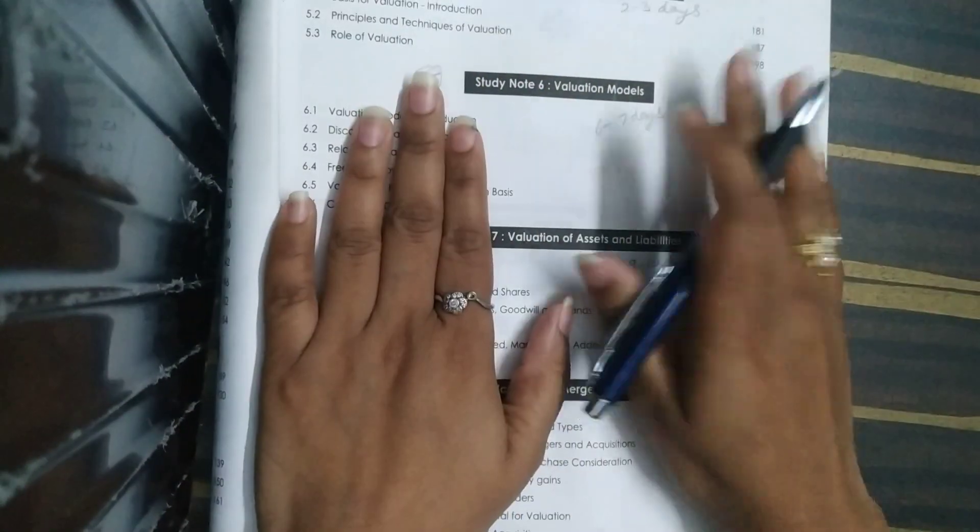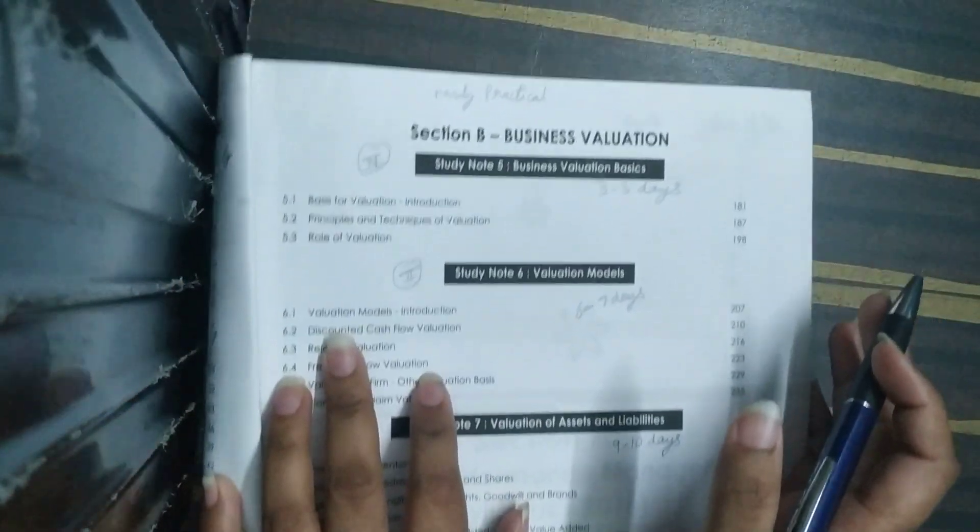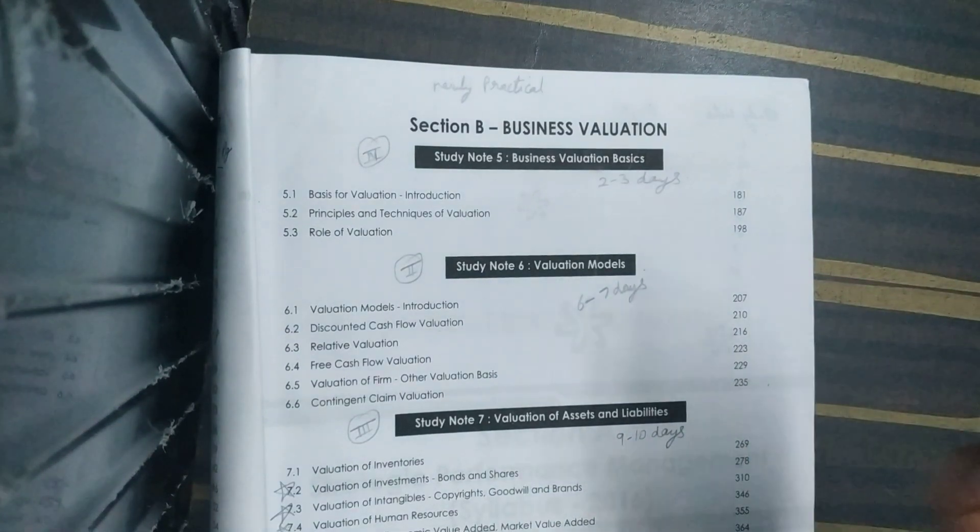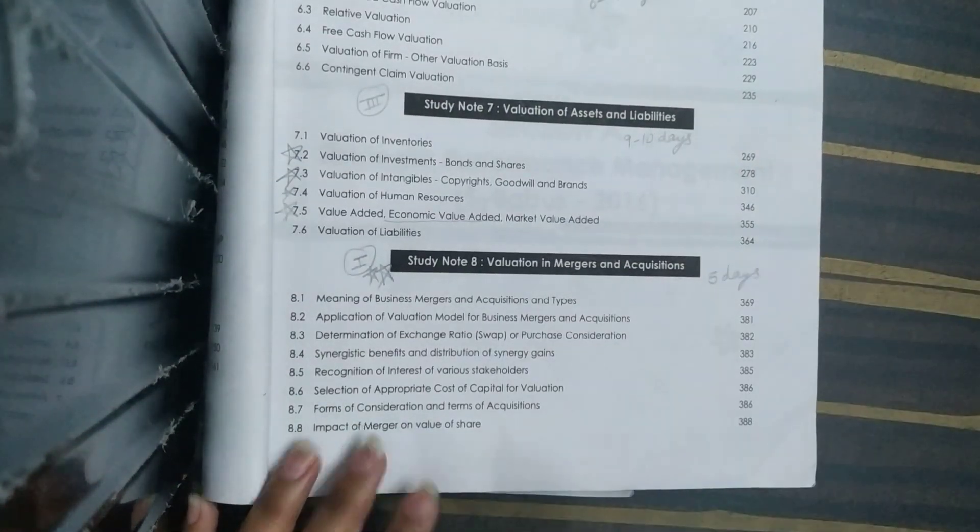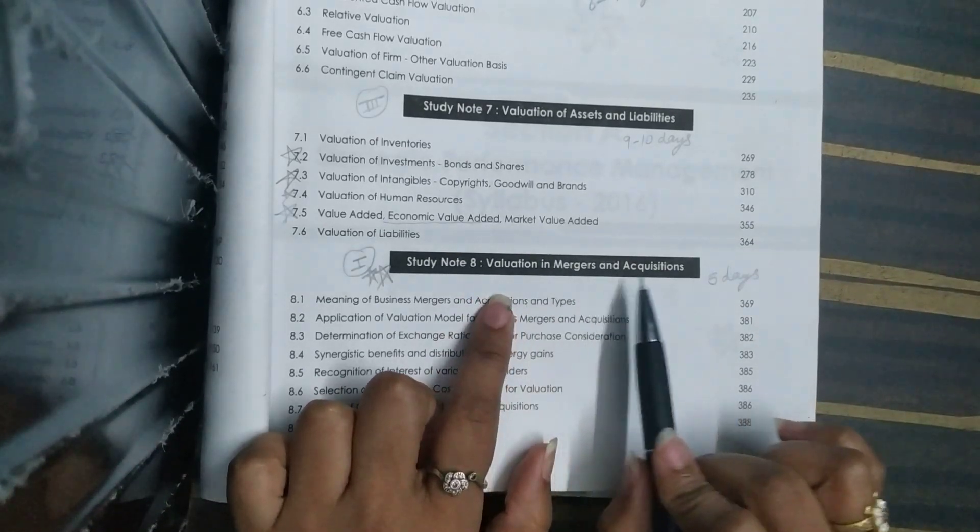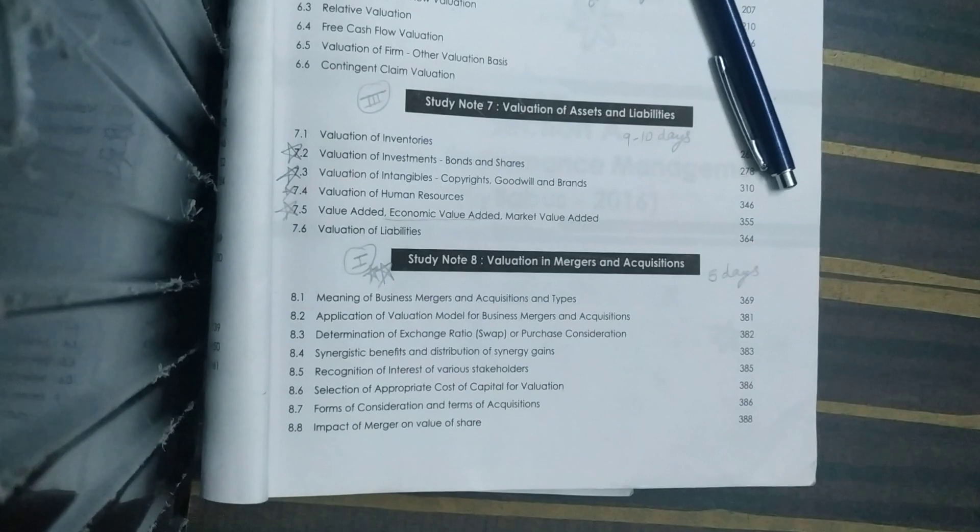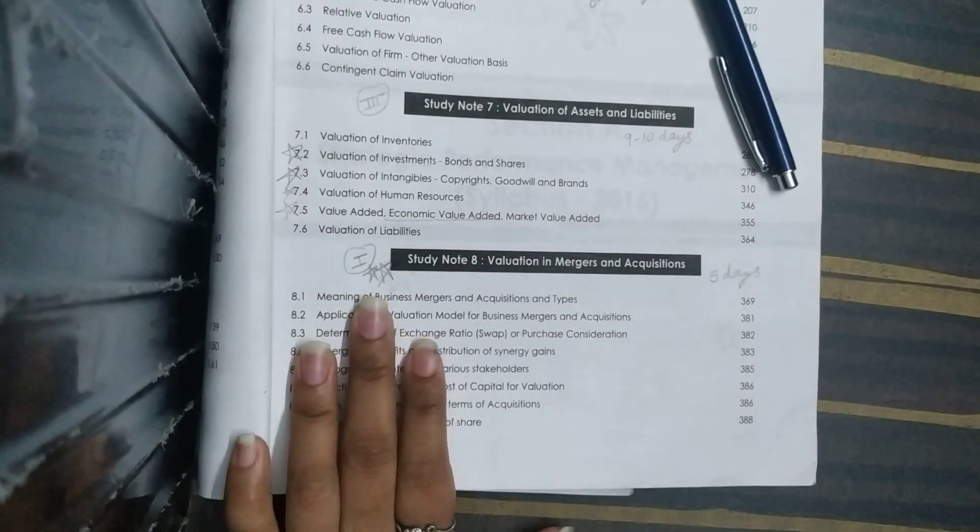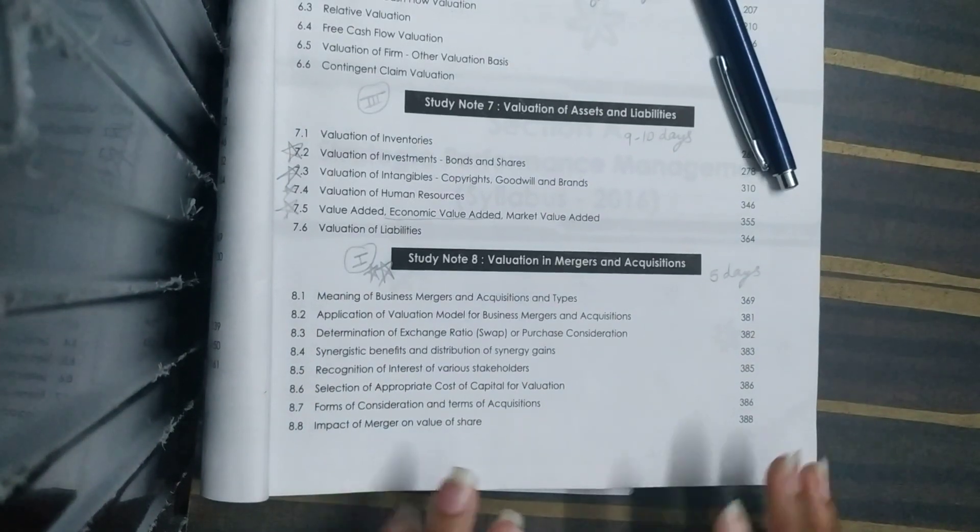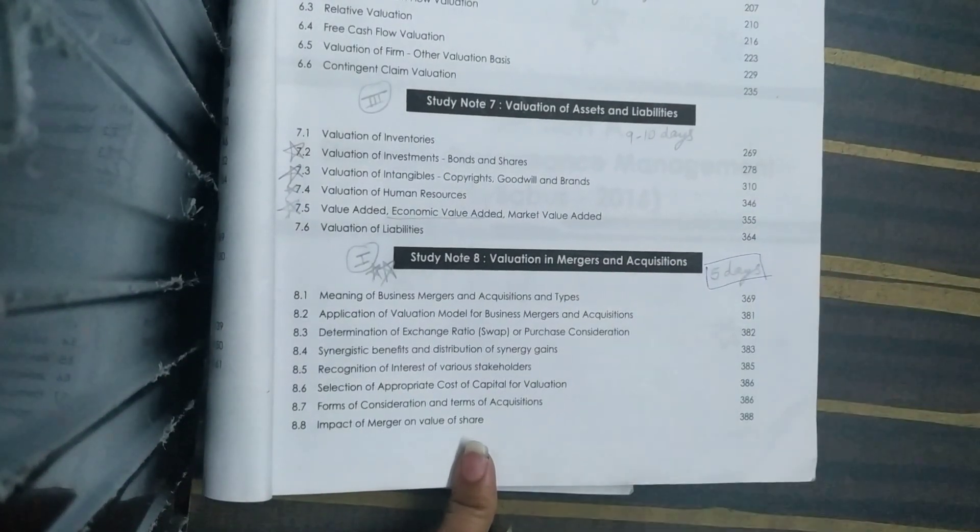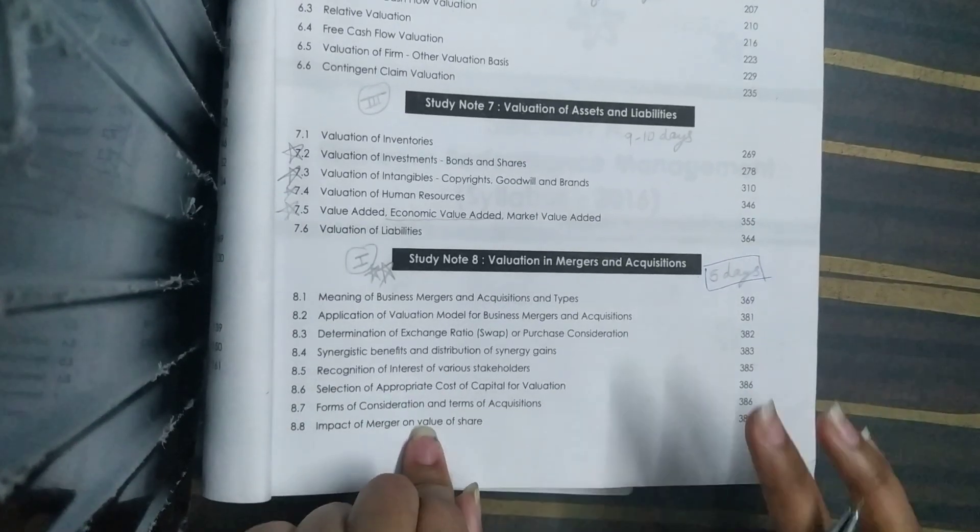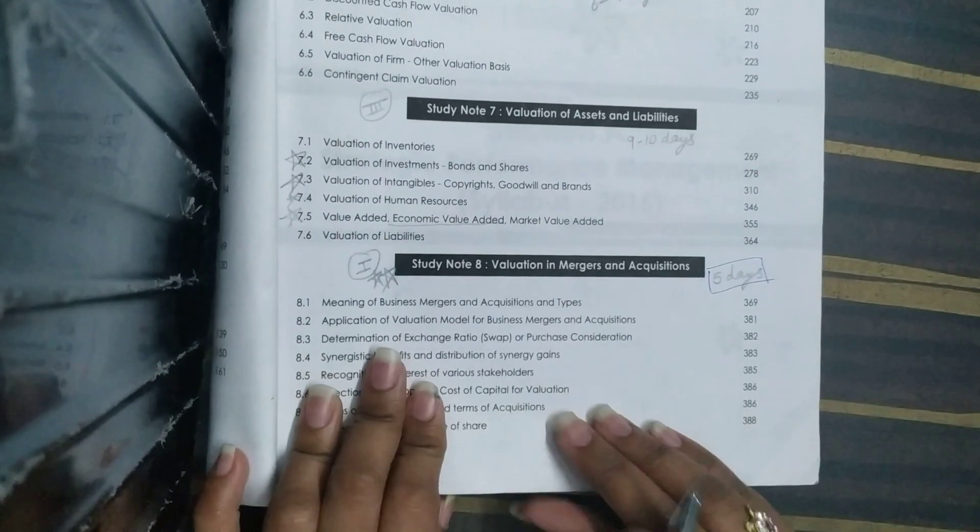Next, we move on to Section B, which is Business Valuation. Mainly our Business Valuation is a practical approach with mainly practical questions. There are theoretical questions but less than practical. I have given the first weightage to Study Note 8, Valuation in Mergers and Acquisitions. This chapter, you can complete it properly within 5 days. You can cover all the topics with revision. All the topics are very important, so you should do it properly. Don't skip it, cover it properly.